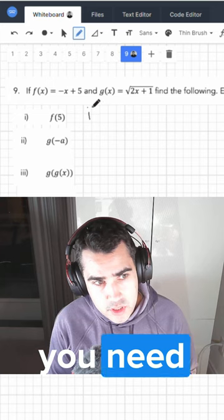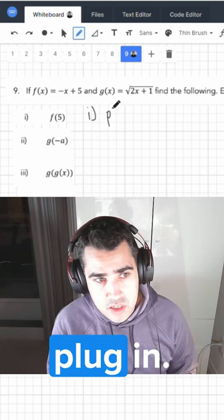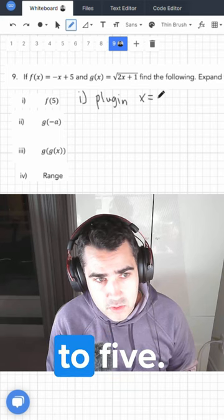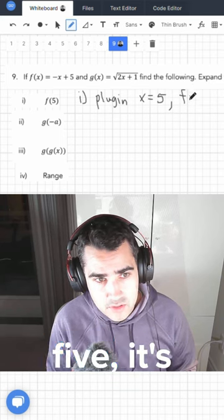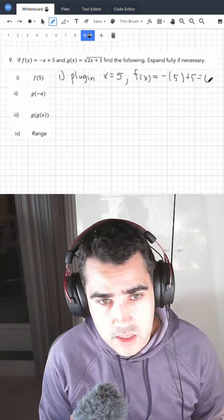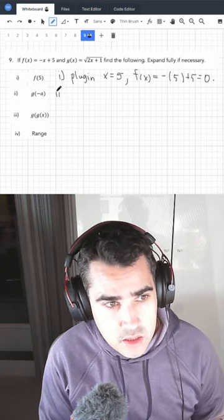For number one, what you need to know is how to plug in a value into the function. So x is equal to 5 and f of 5, it's going to be minus 5 plus 5. We know that is 0 and that's the answer. Number two,